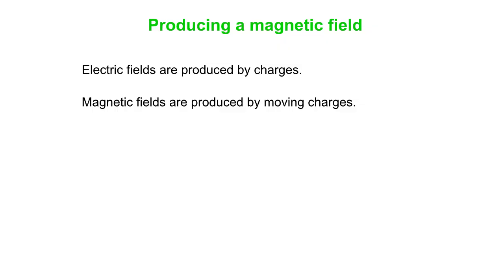Where do magnetic fields come from in the first place? If we think about electric fields, electric fields are produced by charges, and magnetic fields are produced by moving charges. In practice, we generally produce magnetic fields from currents.